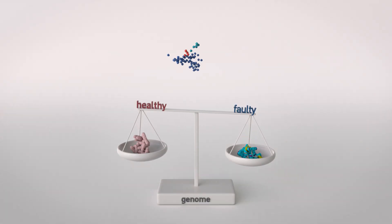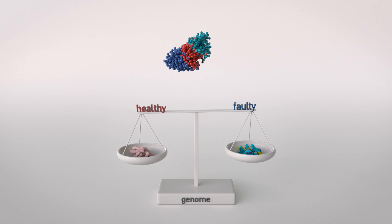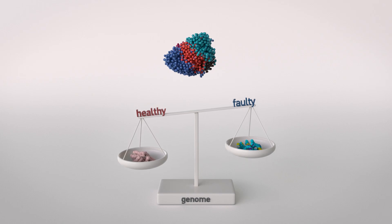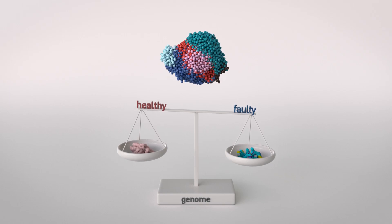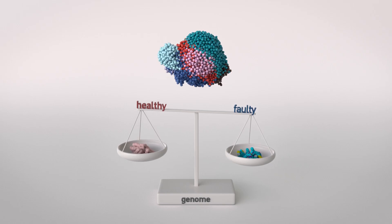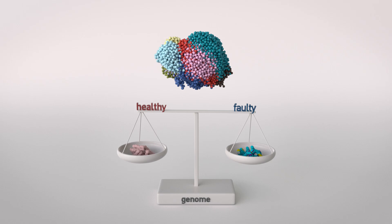And in order to keep growing, the tumour selects for the survival of cancer cells that have balanced the amount of healthy chromosomes and faulty chromosomes in their genome. This keeps them in a goldilocks zone where the amount of genetic instability is just right.